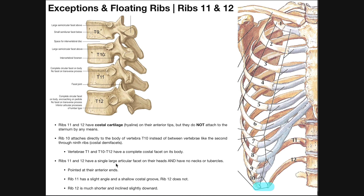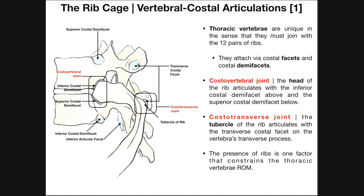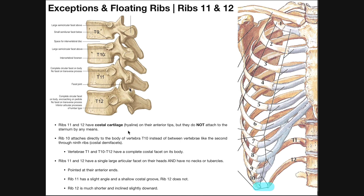Rib number one behaves similarly to ribs eleven and twelve in that T1 has a complete costal facet. T1 does not have a demifacet at the top, which makes sense because there is no thoracic vertebra above T1 — so T1 must have the complete costal facet to articulate with rib one. However, ribs one through ten all have a tubercle and articulate with the transverse costal facets; only ribs eleven and twelve lack the tubercle and do not articulate with those transverse costal facets.